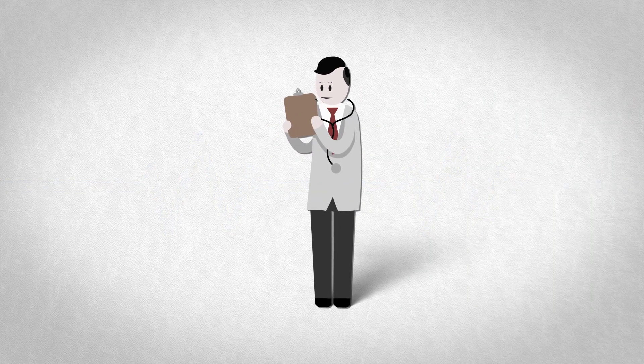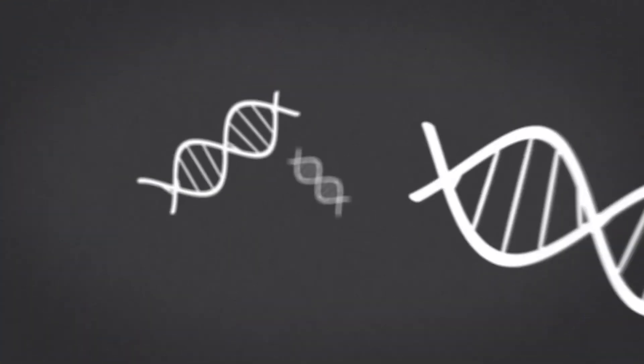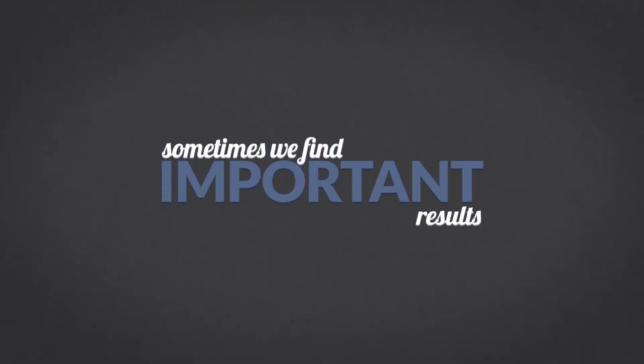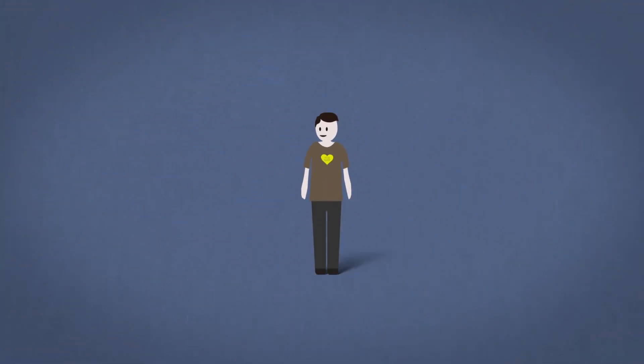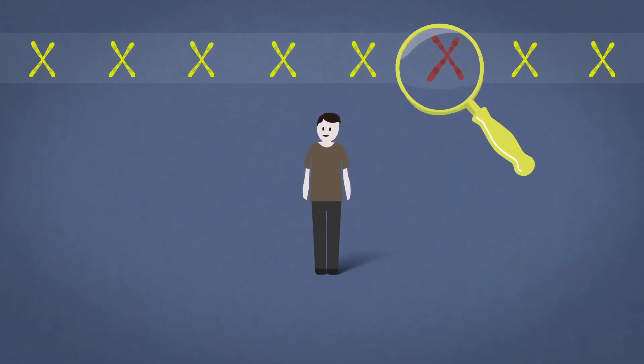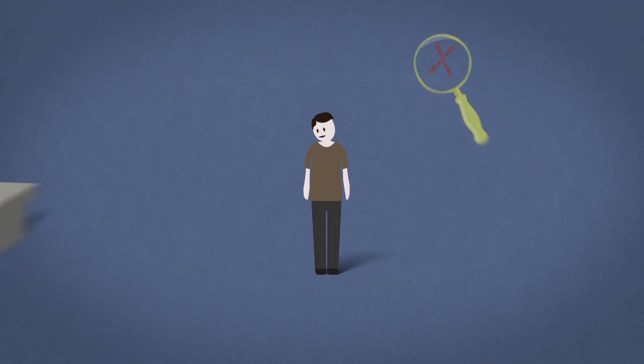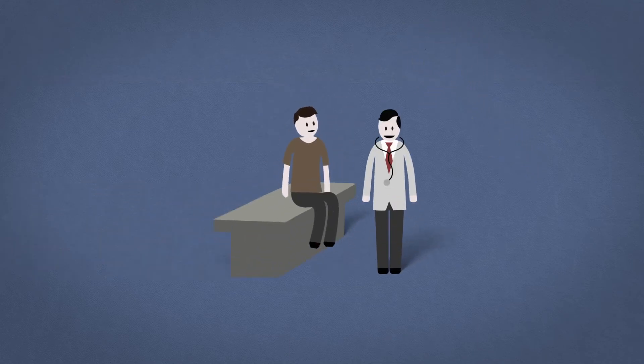The JScreen test is done on a sample of your saliva, which contains your DNA or genetic information. Sometimes we find important results and learn something about your health. While unlikely, you could have a genetic disease that hasn't caused symptoms yet. If this happens, we will let you know and refer you to see a doctor.